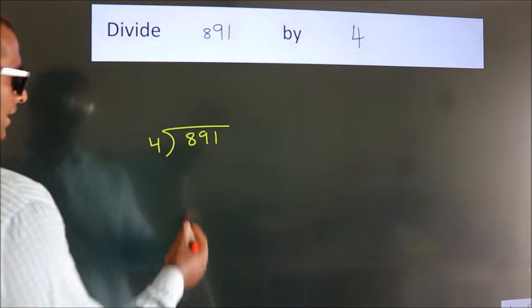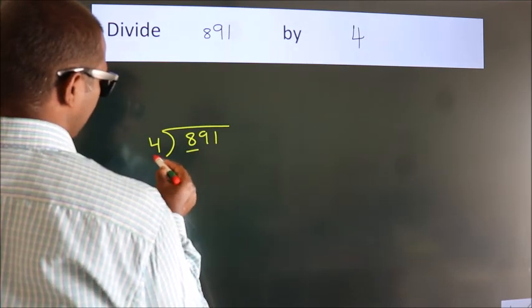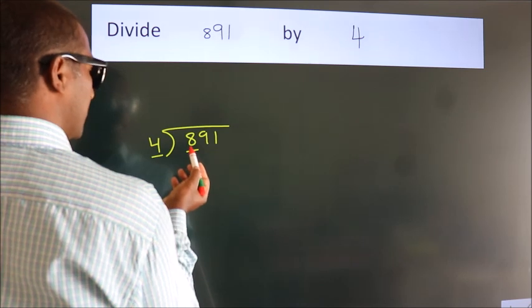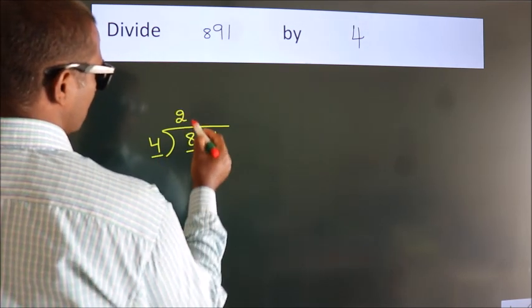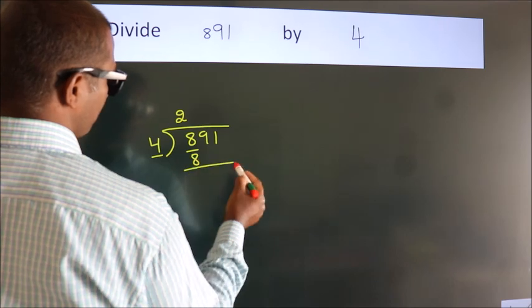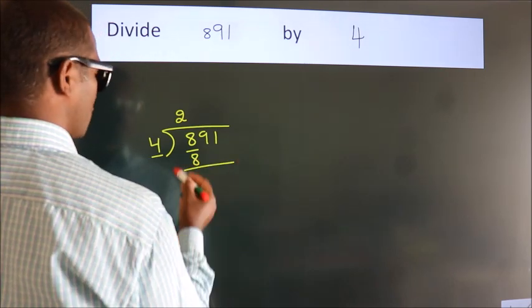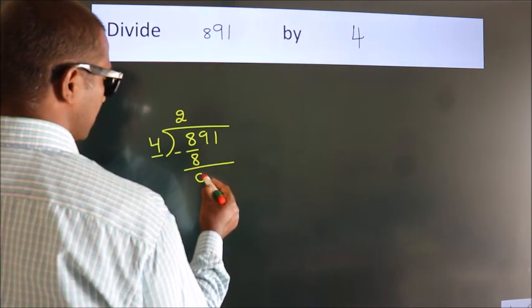Next, here we have 8, here 4. When do we get 8 in the 4 table? 4 twos, 8. Now, we should subtract. We get 0.